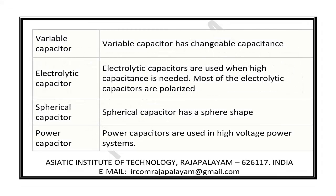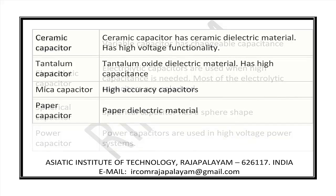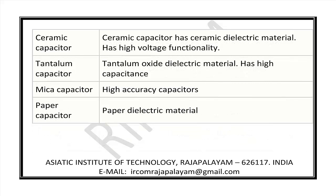Variable capacitors have changeable capacitance. Electrolytic capacitors are used when high capacitance is needed; most electrolytic capacitors are polarized. Spherical capacitors have a sphere shape. Power capacitors are used in high voltage power systems. Ceramic capacitors use ceramic dielectric material and have high voltage functionality.